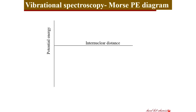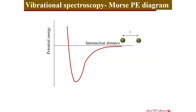Let's now closely look at the potential energy diagram which is called the Morse potential energy diagram, where we have the potential energy of the molecule described in terms of internuclear distance. Before the bond is formed, you have two atoms separated at large distance, and when you move these atoms together closer and closer along the x-axis, you can see that the energy of the system decreases. At a certain internuclear distance, which can be called the equilibrium distance, you have the lowest energy situation.